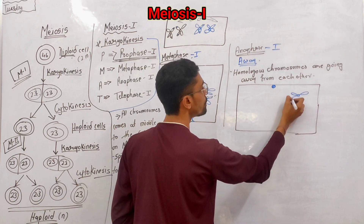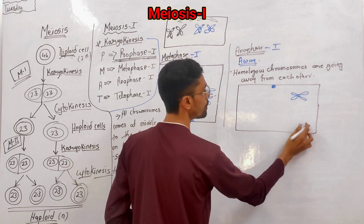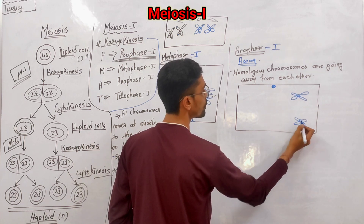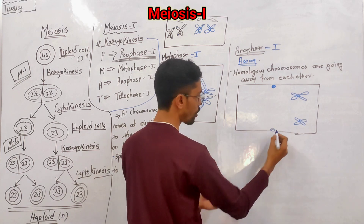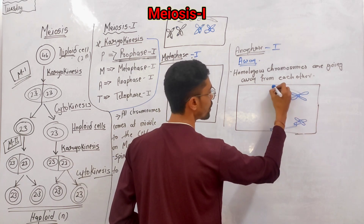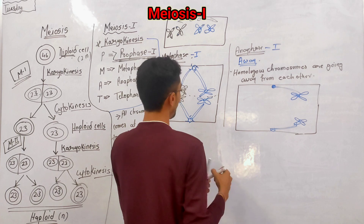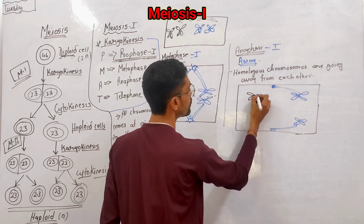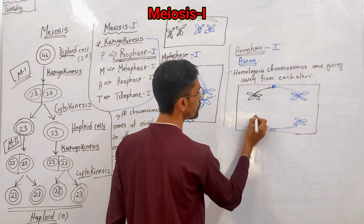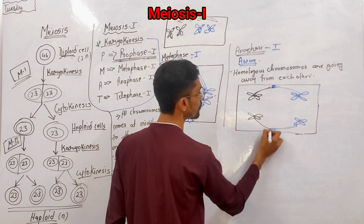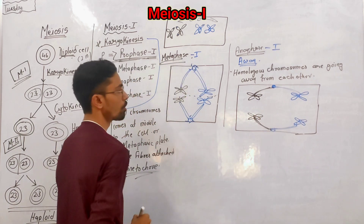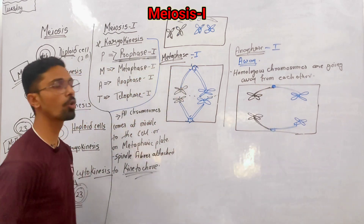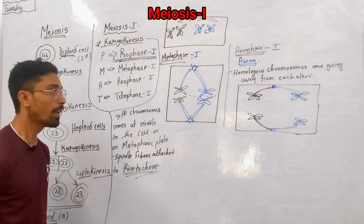In anaphase, homologous chromosomes are separated. The centrosomes are here — the black one and the blue one are over there — attached at opposite poles. So these two separated homologous chromosomes are shown in the diagram.